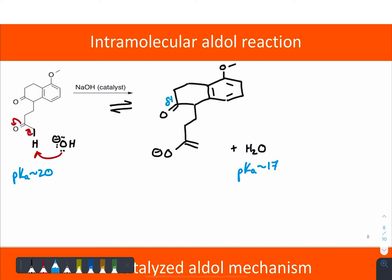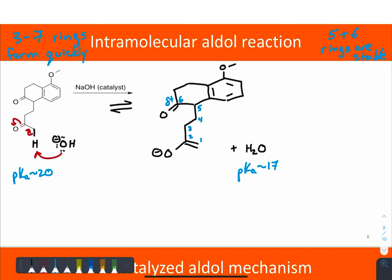So we do have an electrophilic carbon close by. As they react, we can count the ring size, remembering that five and six membered rings are very stable, and three to seven membered rings form very quickly. Their atoms are being held really close together, so as they're moving around in space, there's a quite high chance they're going to collide with each other. So not only would this six membered ring form quickly, but it would also make a very stable ring, and under equilibrium conditions that would be favorable.